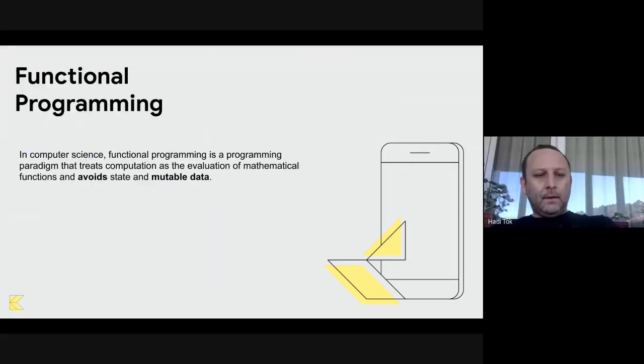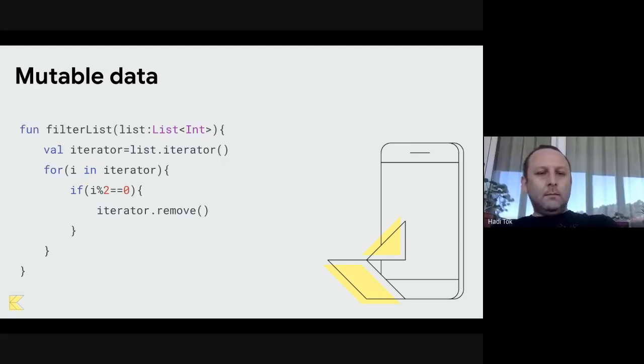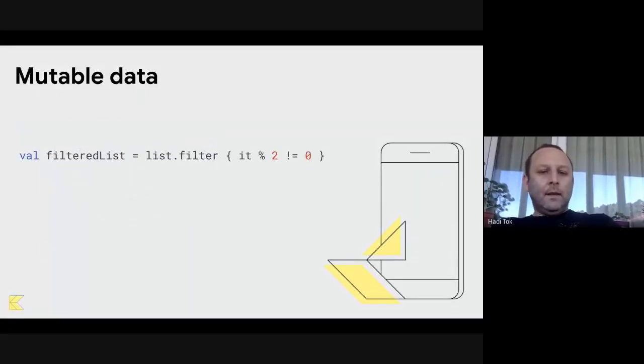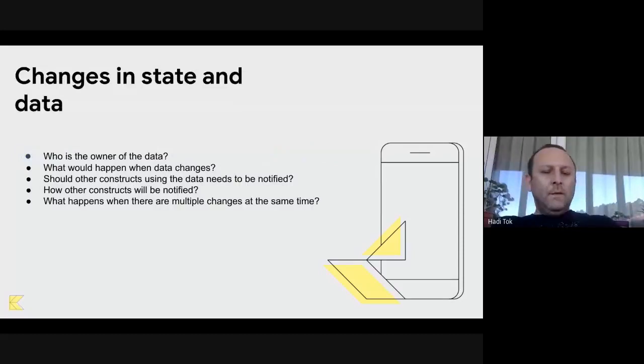Instead what we need to do is create a new list containing the elements of the first list that is filtered and added to the list. In mutable data, let's say you have a function that receives an argument as lists. It has an iterator and it removes the elements from the list if they are divisible by two. So if any other function is using this list, their behavior will be changed as well. So what we need to do is again create a new list instead of modifying the first list.